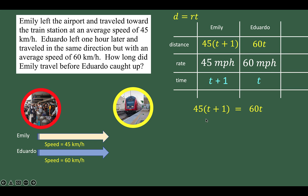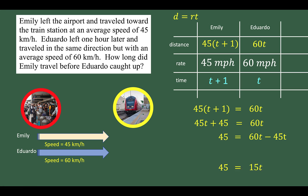It's a matter of solving this equation. We have a monomial times a binomial, so we distribute 45 to the binomial t plus 1 and copy the right side. Then we gather similar terms by subtracting 45t from both sides of the equation. Simplifying, the right side becomes 15t and the left side is 45. Dividing both sides by 15, we get t equals 3.